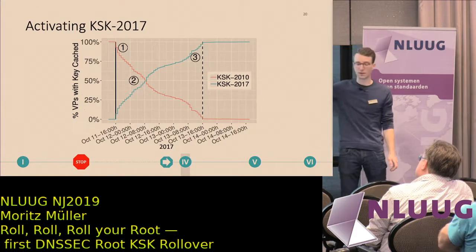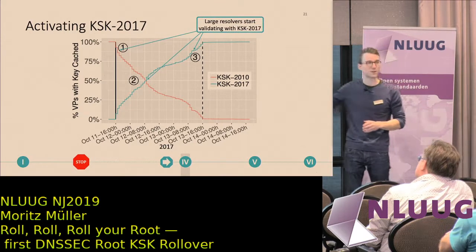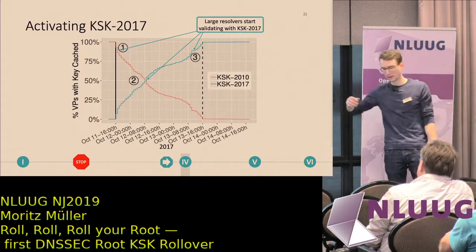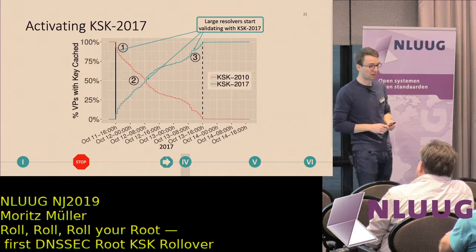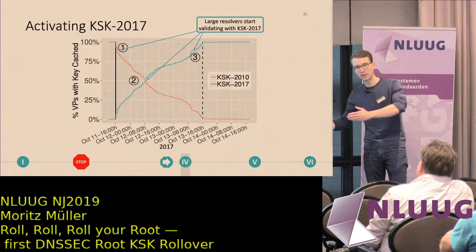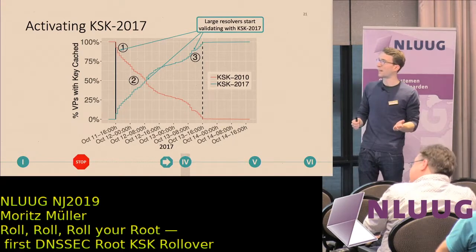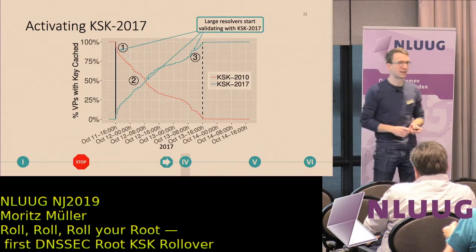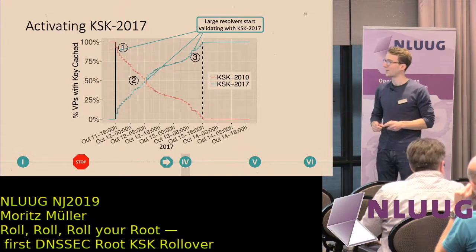You can also see jumps in this figure from large resolver operators switching to the new key — for example Google or Cloudflare. We also observed that a bunch of resolvers seemed to have fetched the old key just before the rollover. One operator of a large European ISP confirmed they deliberately flushed their caches before the rollover and fetched the old key to give themselves more time — because the rollover coincided with a DNS OARC social dinner, and they didn't want to be bothered while having beers.